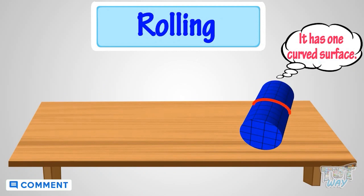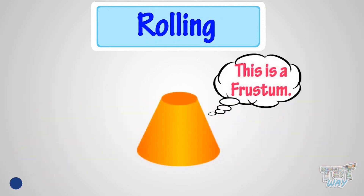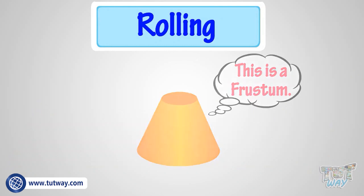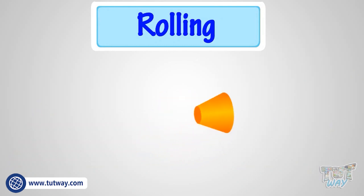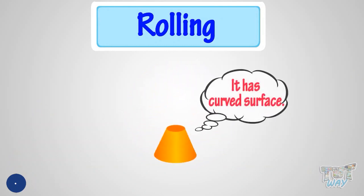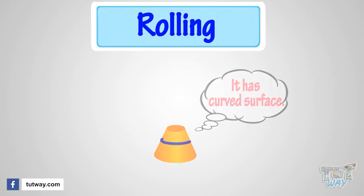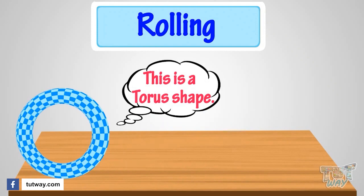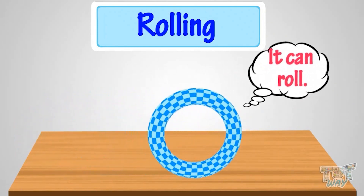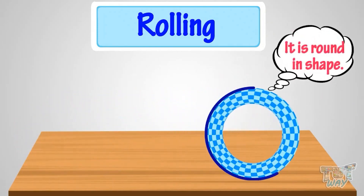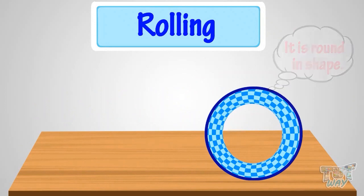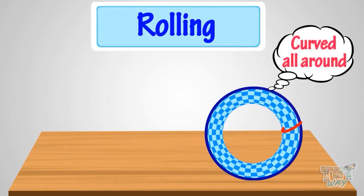This is a frustum — it can roll too, as it has a curved surface. This is a torus shape — it can roll as it is round in shape and curved all around.